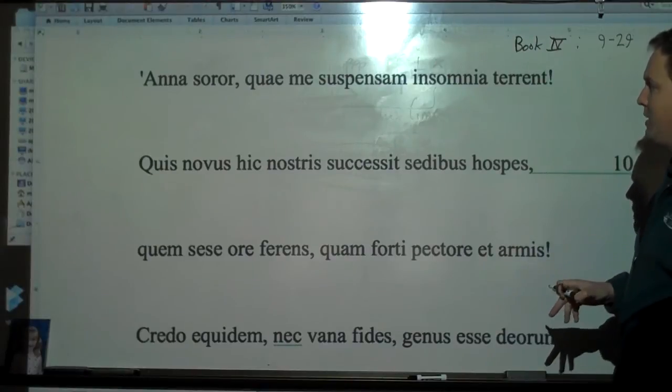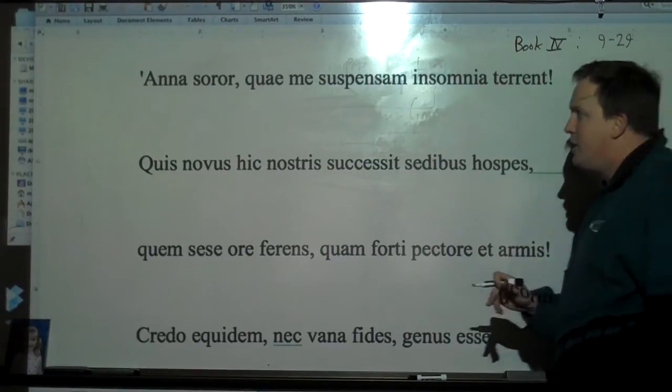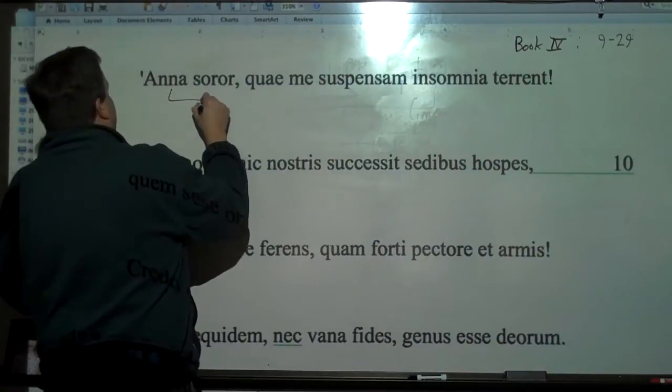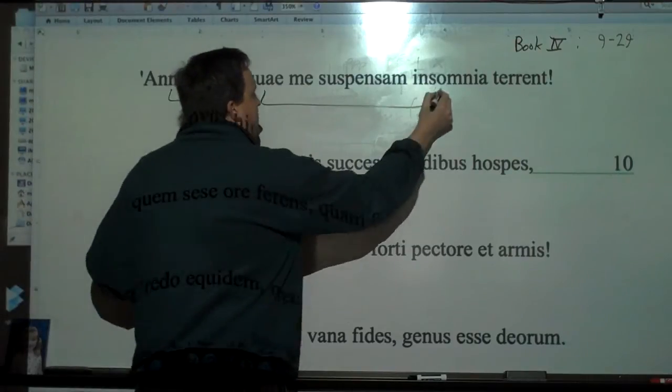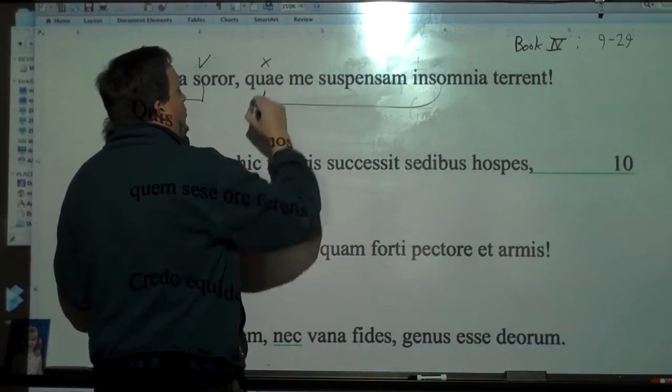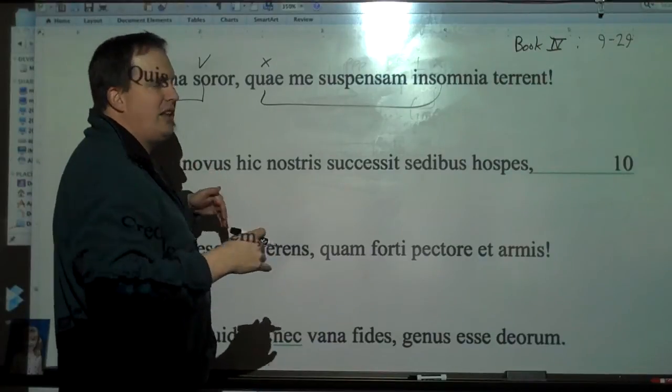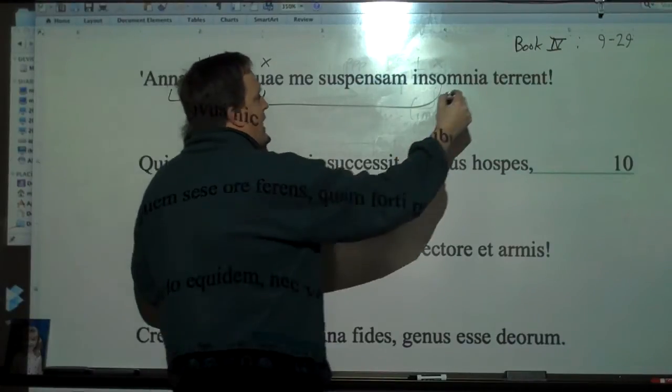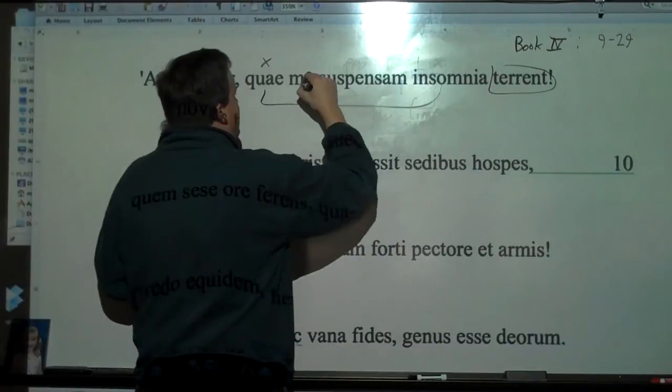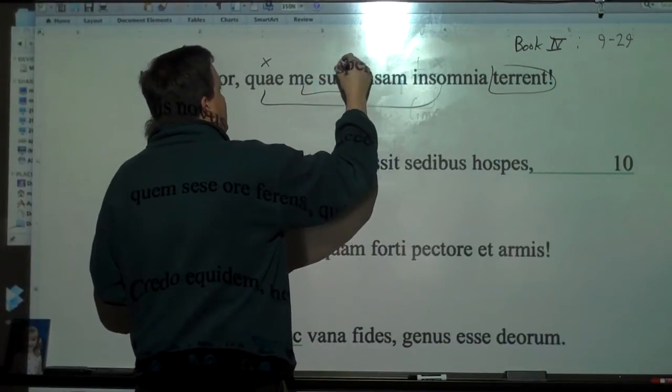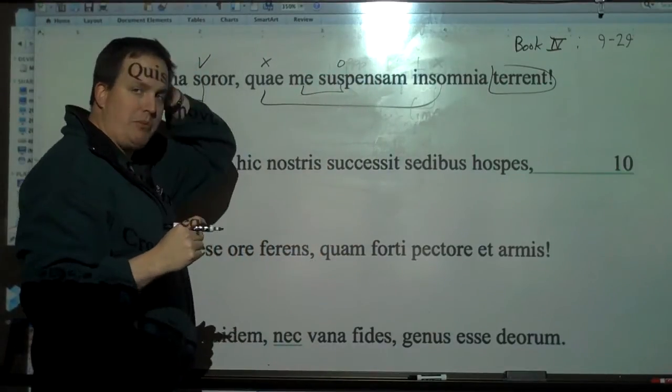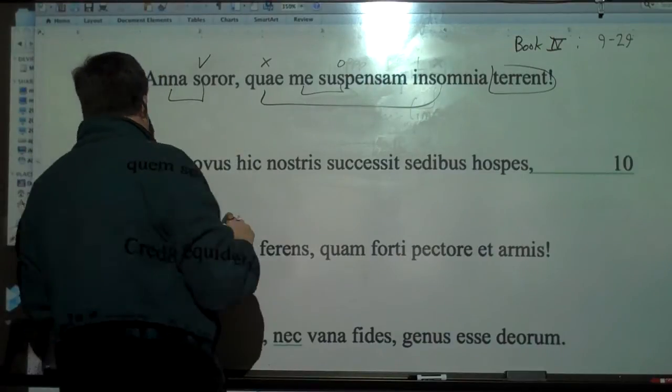Anna soror, quae me suspensam insomnia terrent. So sister Anna, vocative. Quae, insomnia, nominative. What dreams terrify me, agitated? Me agitated. The suspensam there is accusative. Alright.